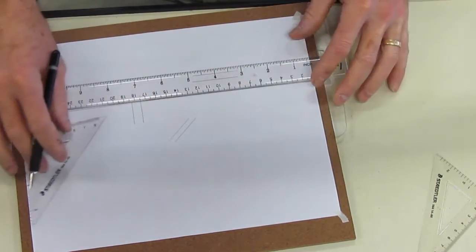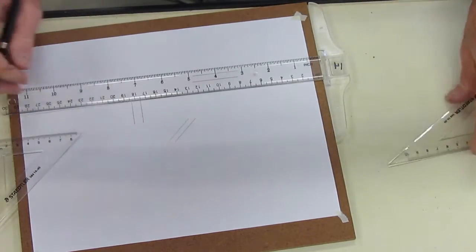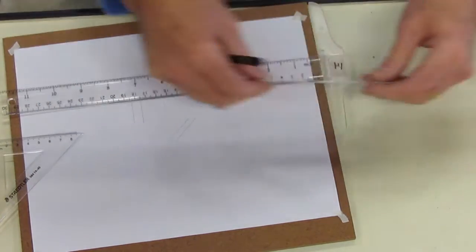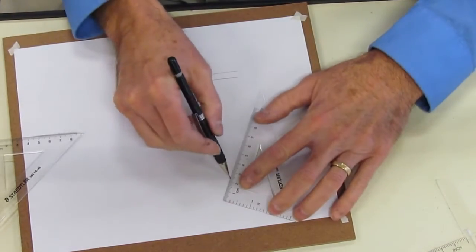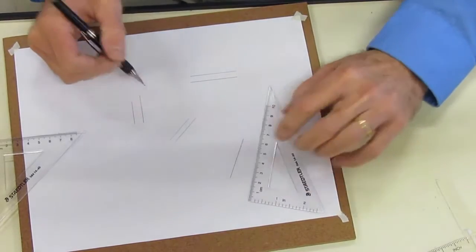But what if that line doesn't fit a 45 or a 30-60-90 like our other triangle, so it doesn't fit this triangle either, how do we do it? So, any given angle, if I just draw a line up here, there it is, and I want to make a parallel line to that.